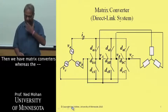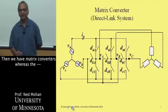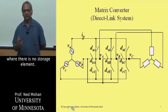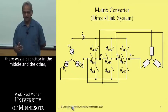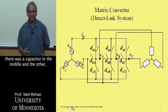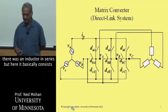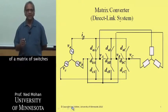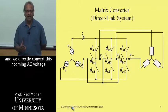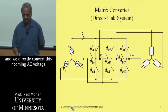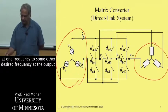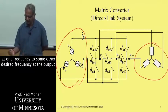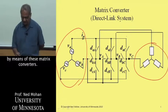Then we have matrix converters, where there is no storage element. As we saw in the previous two systems, in one there was a capacitor in the middle, in the other there was an inductor in series, but here it basically consists of a matrix of switches, and we directly convert this incoming AC voltage at one frequency to some other desired frequency at the output by means of these matrix converters.